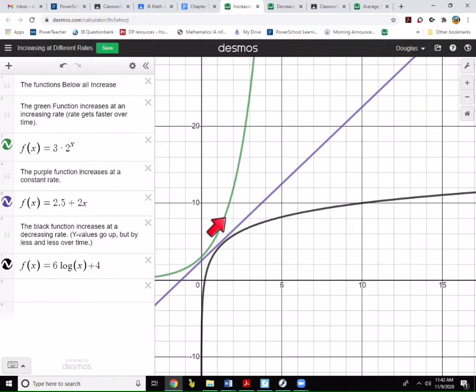However, when we look at the green function, what we see is that hill is getting steeper and steeper and steeper. What that means is as this function is increasing, its rate of increase is going to go faster and faster and faster. So what we say is the green function increases at an increasing rate because we're going faster as we increase.